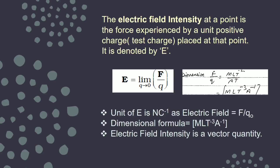Another way to define electric field intensity is: the force experienced by a unit positive charge. If the test charge is taken as unity, then electric field and force have the same value. Otherwise, from the expression, if you substitute q = 1, it gets cancelled in the force expression, and you can write the units and dimensions for electric field.